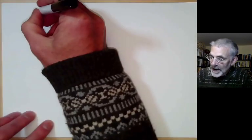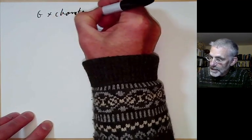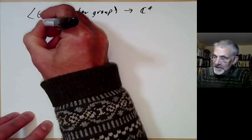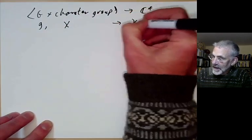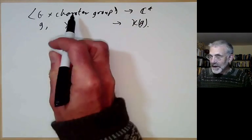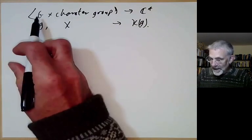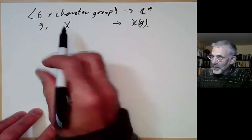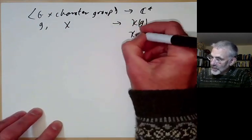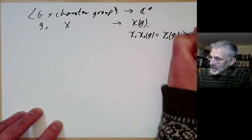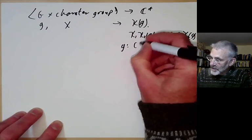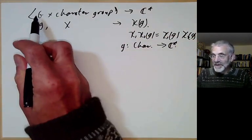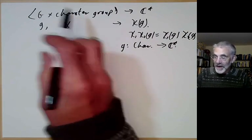We get a pairing from G times its character group to the non-zero complex numbers, taking g and a character to the value of the character on g. If we fix g, this gives a homomorphism from characters to complex numbers, since chi1 chi2 of g equals chi1 of g times chi2 of g. So g is a homomorphism from the character group to the non-zero complex numbers — the characters of the group of characters of G is G itself.